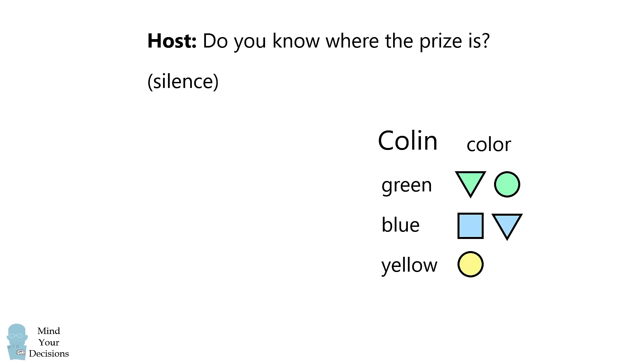Now similarly, if Colin had been told the color was yellow initially, then he would have known it's the yellow circle. But Colin was silent, so we can eliminate this. He was not told yellow initially.